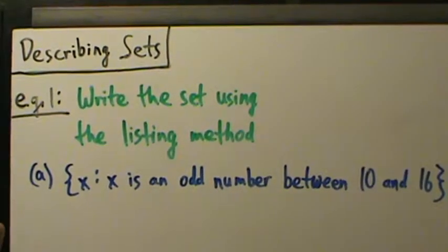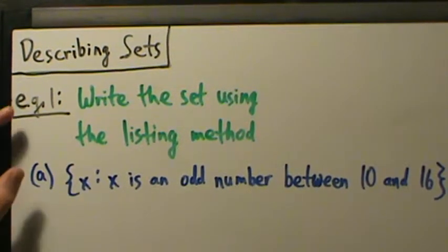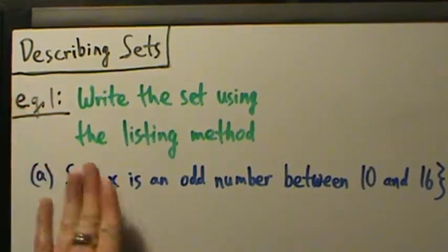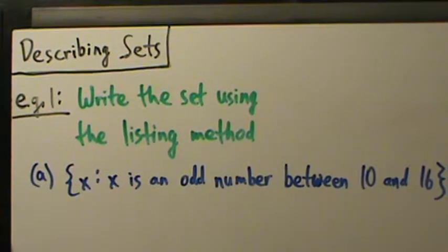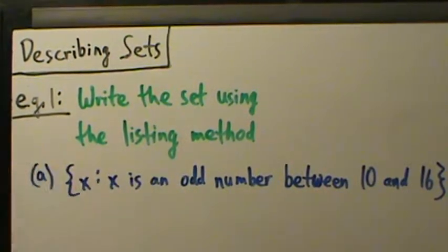All right, so here's a quick example of converting between set builder and the listing method. For example one here, we want to write the set using the listing method. We're given the set here with the set builder notation, or the set builder method, whatever you want to call it. And we want to express or write this set using just the listing method.